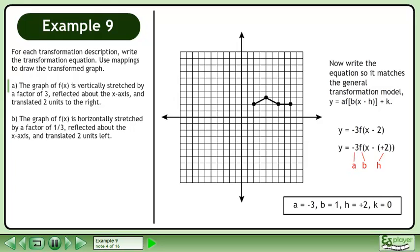The a value is negative 3, the b value is 1, the h value is positive 2, and the k value is 0.